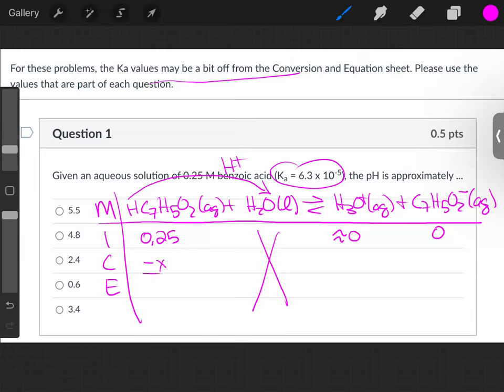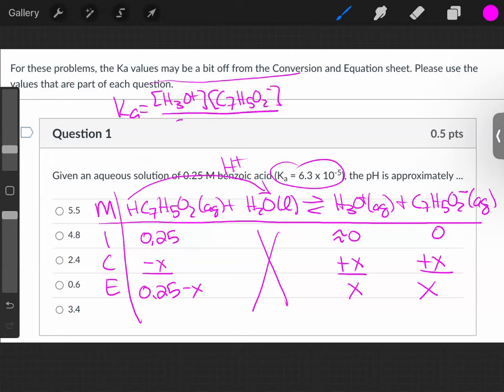Subtract X, add X to the other side. Now we're ready to plug into what we used to call a KC expression, but now we're going to say this is a Ka. So Ka equals hydronium concentration times benzoate concentration over benzoic acid concentration.